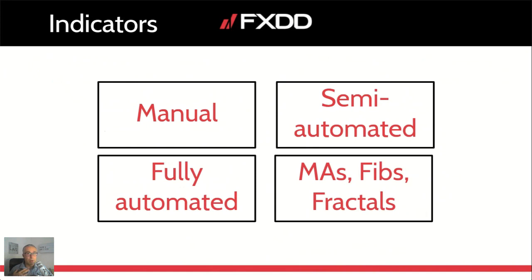Think about what type of indicators you use — are they manual ones you draw yourself, semi-automated ones like fibs or trend lines that you draw once and they keep their value, or fully automated ones like moving averages and pivot points that are calculated automatically with each candle? Personally I use a mix: moving averages and fractals are fully automated; fibs are semi-automated. I want to clarify I'm not talking about entry or exit automation like Expert Advisors — just whether the indicator updates automatically.